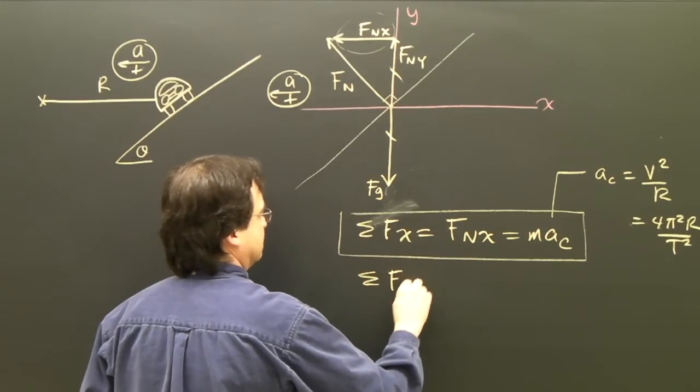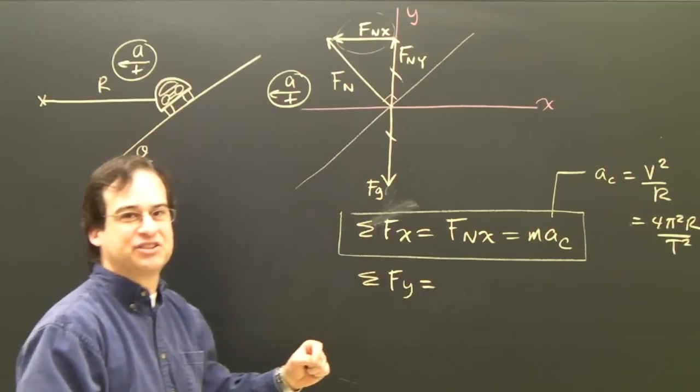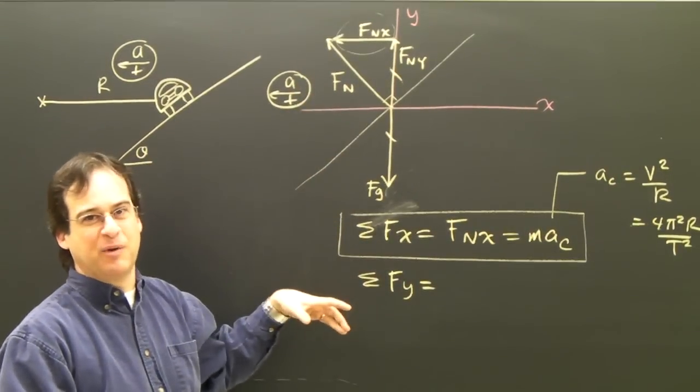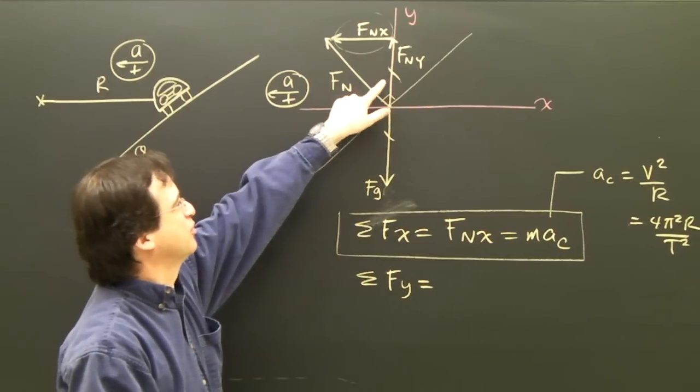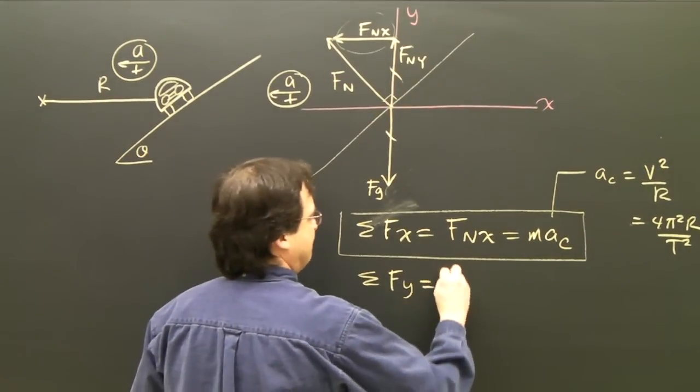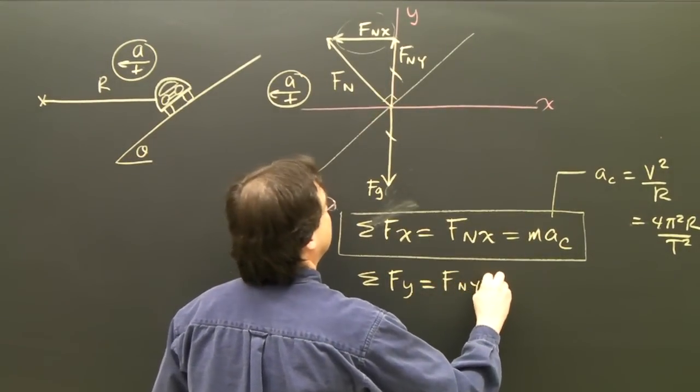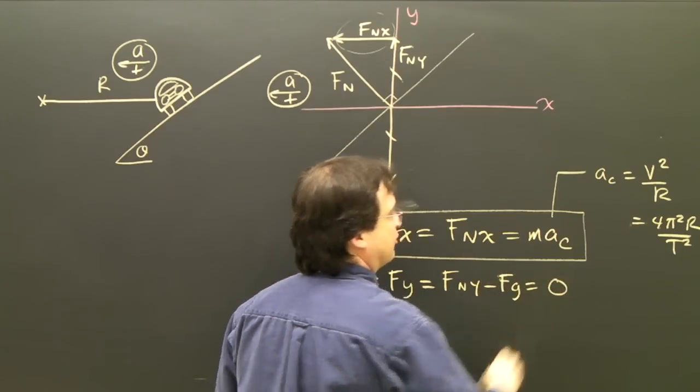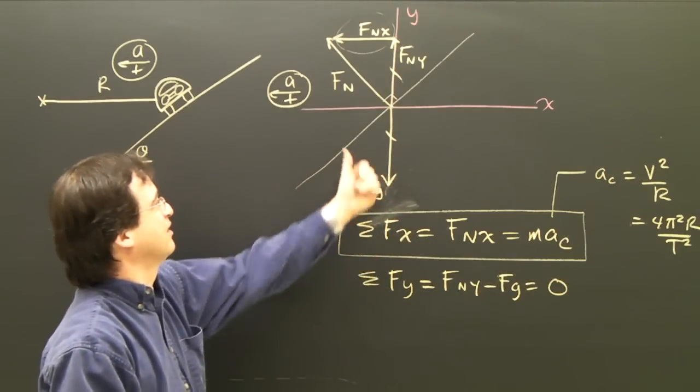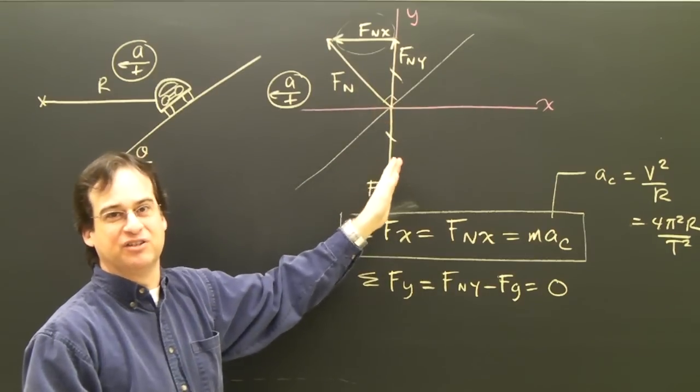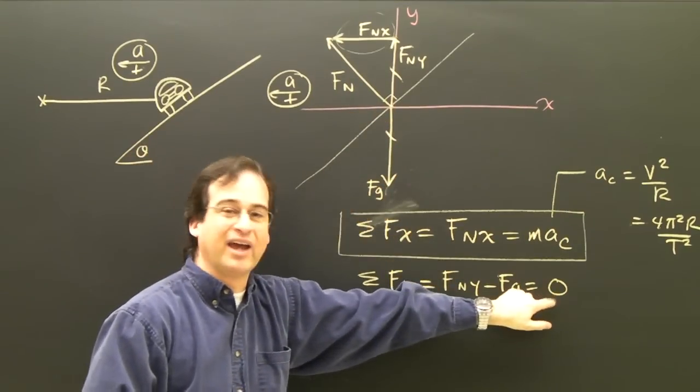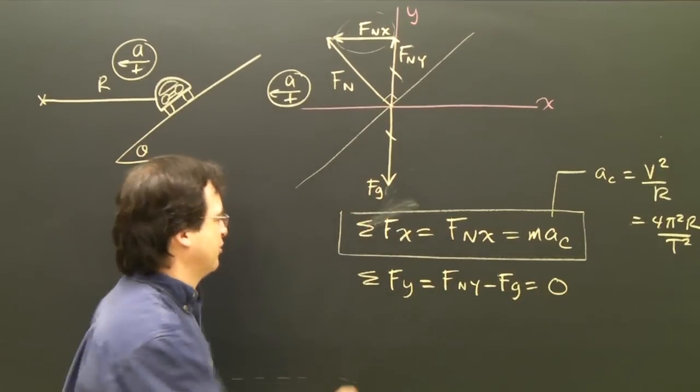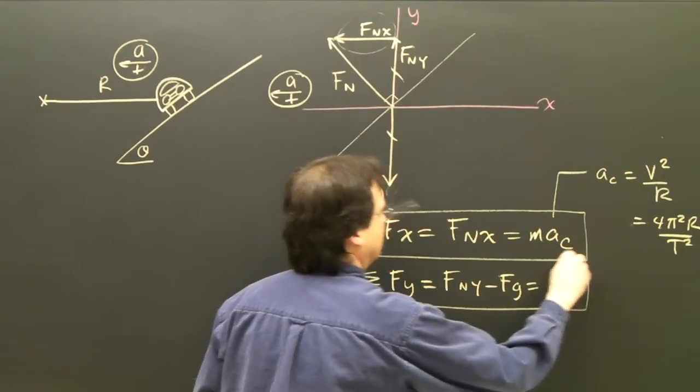Let's look at the y direction. In the y direction, I can choose up or down as positive because it's not accelerating. So I'm going to choose up as positive. So Fn,y minus Fg equals zero. It's accelerating this way. So in the y direction, there's no acceleration. Ma adds up to zero. So this is the equation in the y direction.